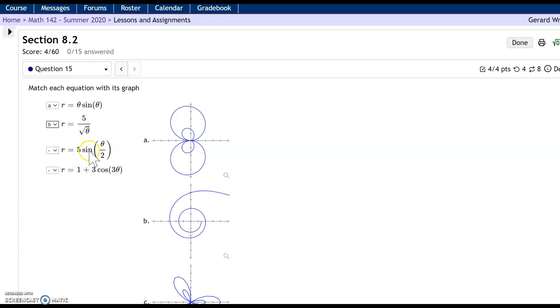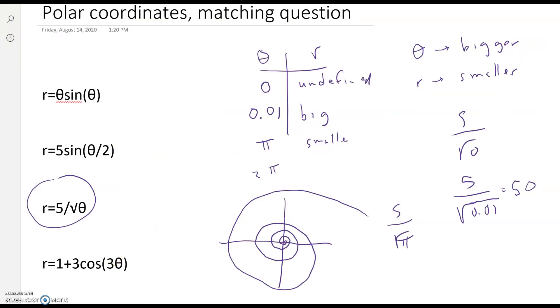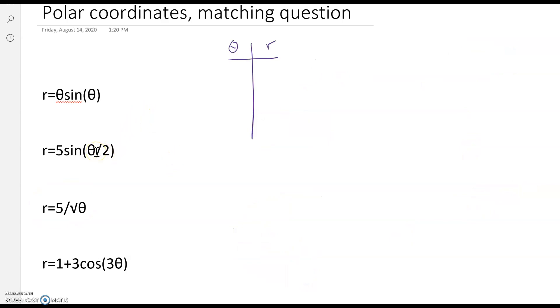Next one. 5 times sine theta over 2. Let's start with 0 again. When theta is 0, sine of 0 is 0. So I've got the point in the middle there. 0, 0 again.